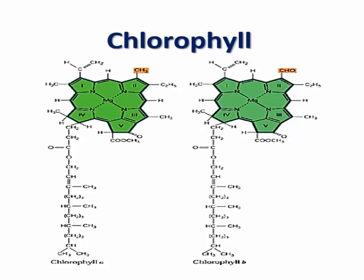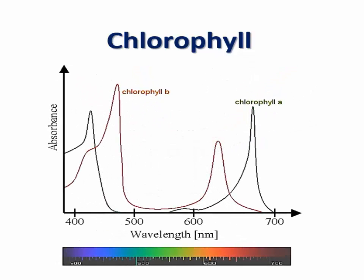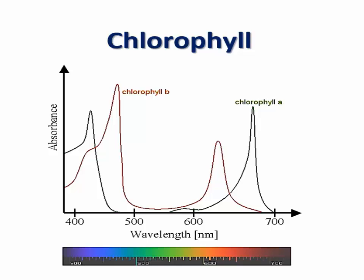Both chlorophyll A and B absorb blue and red wavelengths, which are near the ends of the visible spectrum. If we plot the absorbance values of different wavelengths by chlorophyll A and B, we obtain this graph. This plot is known as the absorption spectrum. As you can see, the peak values for both types of chlorophyll are in the blue and the red wavelengths of the visible spectrum. Green is not absorbed and is reflected back, giving these pigments their distinctive green color.